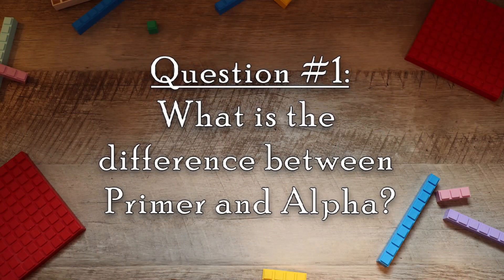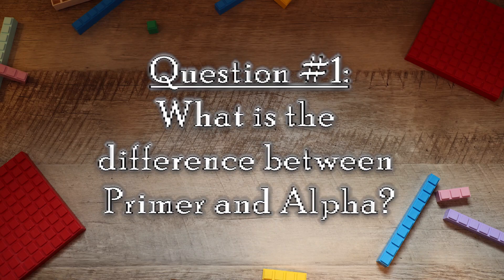So we're going to start with question number one. The first thing to understand is Math U See is a mastery style program. The only level that is not mastery is Primer. Primer is your introduction to math — it's just to give kids a flavor of what type of math they're going to be expecting as they move through the different levels. With Alpha, though, Alpha is mastery.